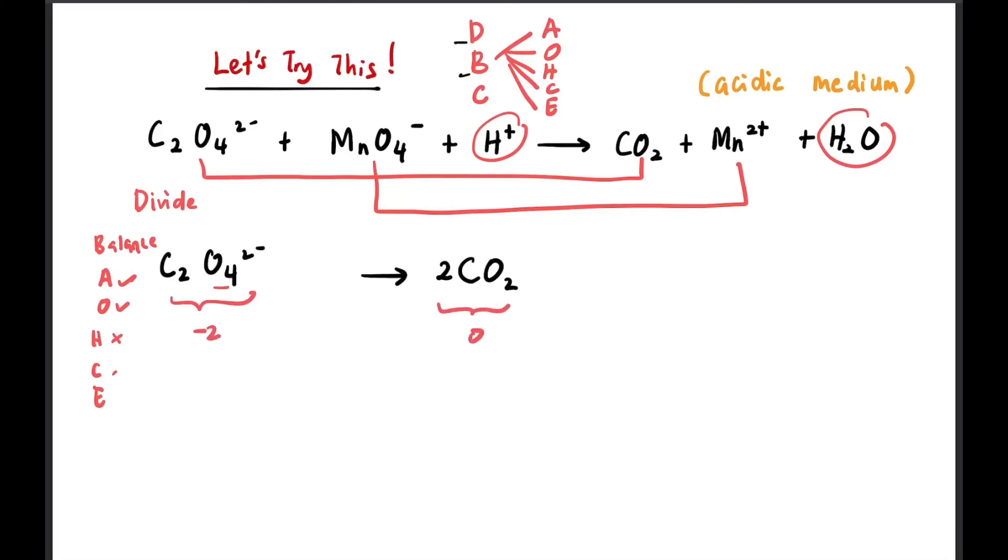Now let's go to charge. Charge is -2 on the left, zero on the right. So we add 2 electrons on the right. So we get -2, -2. Balanced.